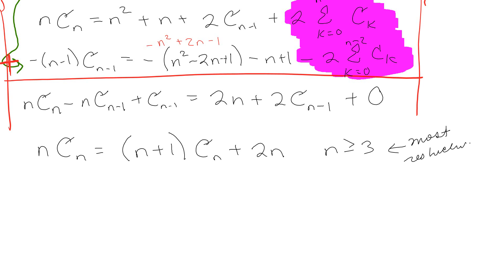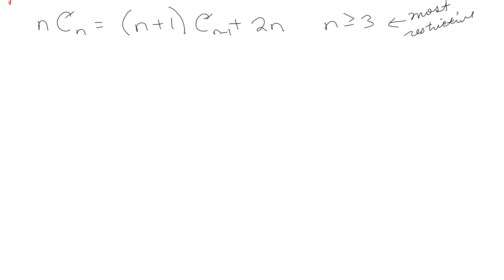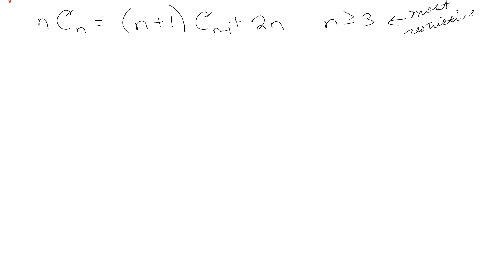We have to use n ≥ 3 since that's the most restrictive condition, and we may be able to relax that later. But look what happened — we basically took this horrible thing and rewrote it without a summation inside the recurrence. So now we can go ahead and write this recurrence as a summation.